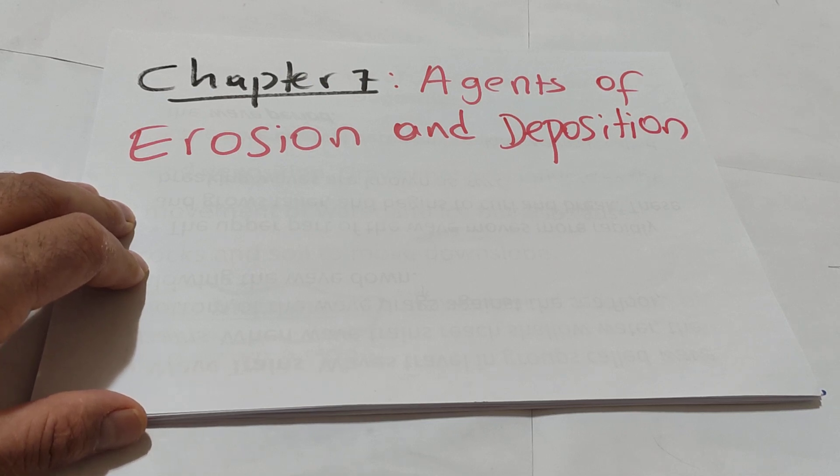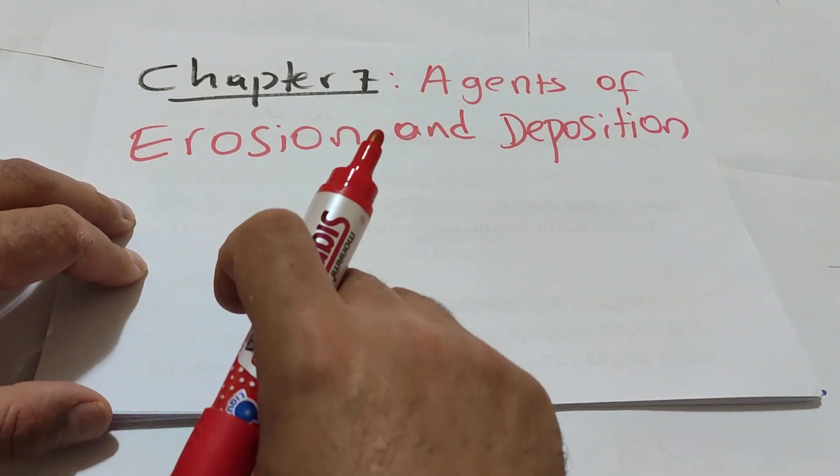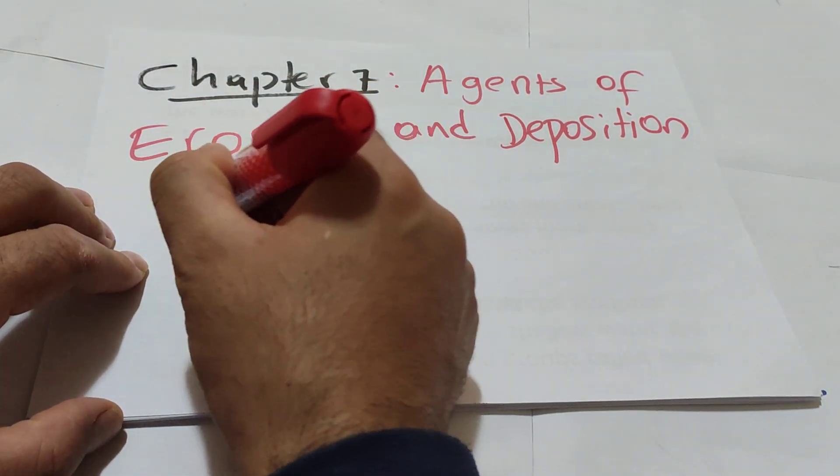Section 2: shorelines, erosion and deposition. Section 3: wind, erosion and deposition. Section 4: the effect of gravity on erosion and deposition. Today we are going to study Section 4.